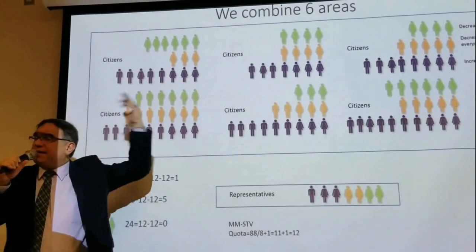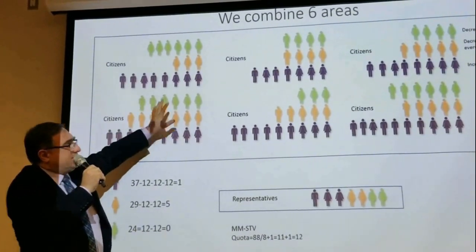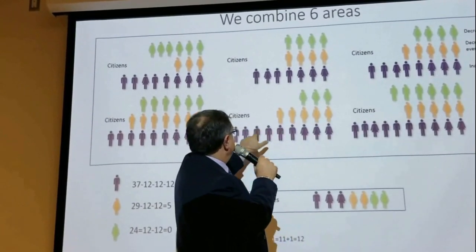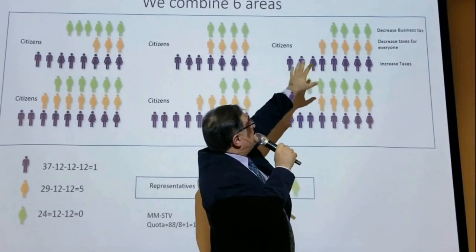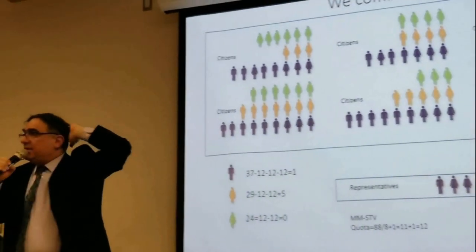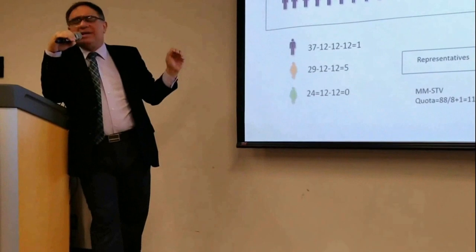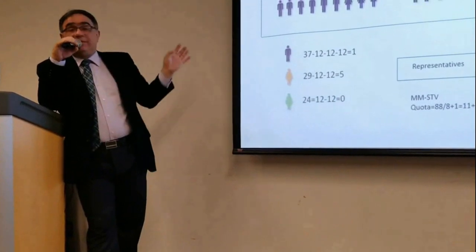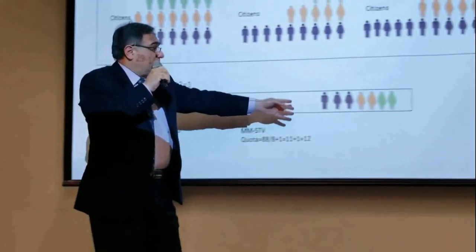If you just apply single transferable voting in single jurisdictions, it doesn't solve the proportionality problem. Out of six areas, only one member will be voting to increase the taxes. But if you go with multi-member STV — which is what is on the ballot — a quota is automatically calculated based on a formula: divide the number of voters by the number of candidates to elect plus one. In this case, the quota is twelve.